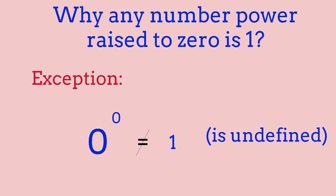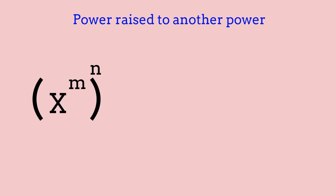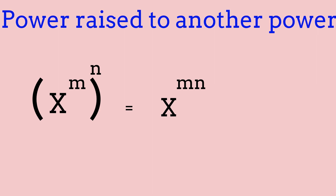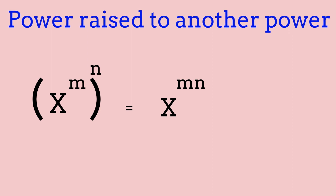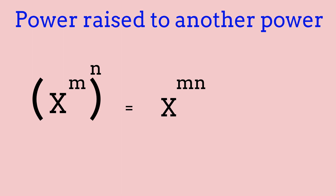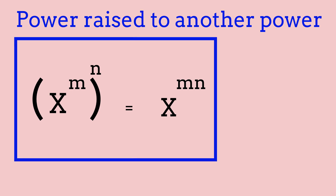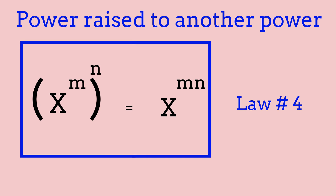Now we're going to be going over law number 4: a power raised to another power. For example, if we have x to the power of m, all in brackets, raised to the power of n, we can rewrite this as x to the power of m multiplied by n. For example, 3 to the power of 2, raised to the power of 3, equals 3 to the power of 6 — because we just multiply the two exponents. To solve this, we can do 3 to the power of 2 times 3 to the power of 2 times 3 to the power of 2, or 3 times 3 six times. You just multiply the two exponents when they're outside of brackets.